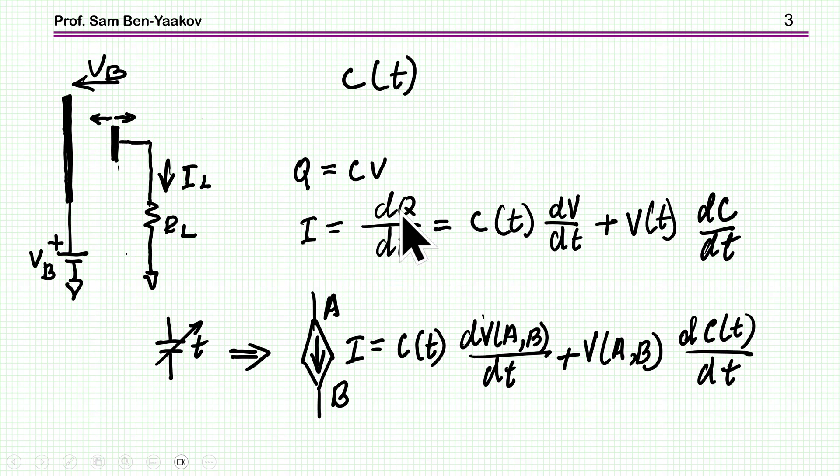Now the current is the derivative of the charge, and the charge is the capacitance times the voltage. In this case, both the capacitance and the voltage are going to be time dependent. The capacitance is time dependent because we are moving the electrode back and forth, and the voltage will be time dependent because as we move it there will be current and therefore the voltage drop on the capacitor will change.